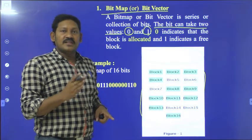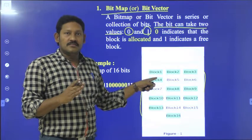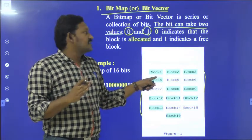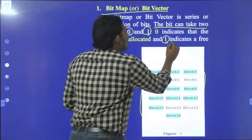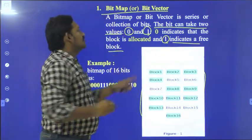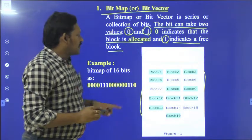Whether the block is free or not: if a block is free, it is represented with 1. 1 indicates a free block, 0 indicates that the block is allocated.